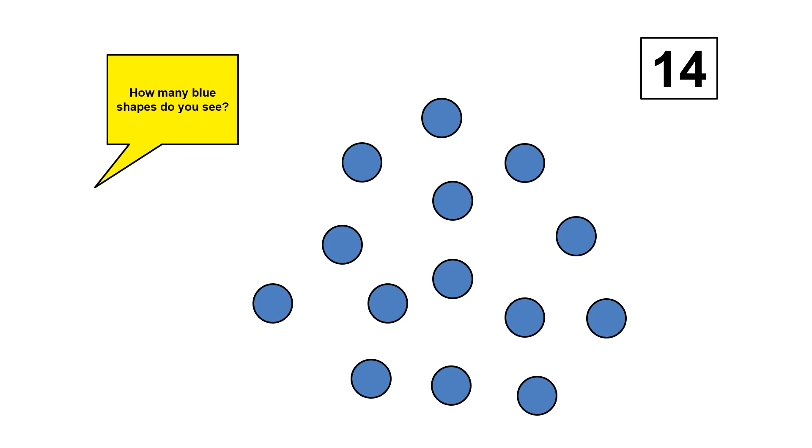How do you know that there were 14 shapes? Did you count each shape one at a time? Or did you see them in different groups?